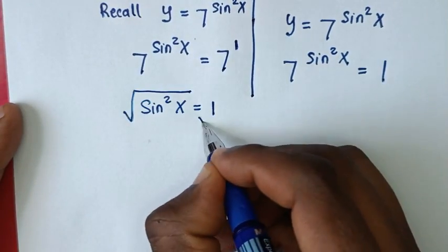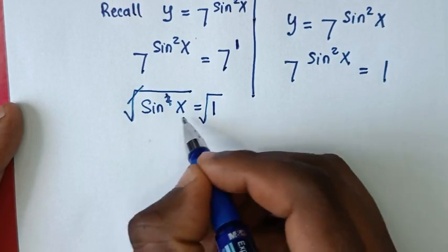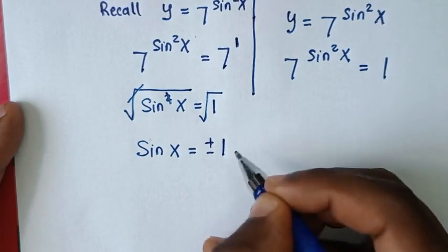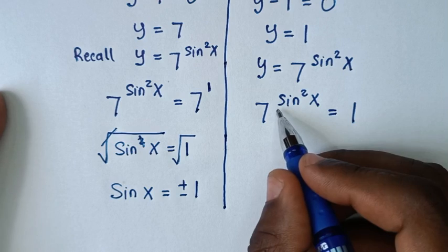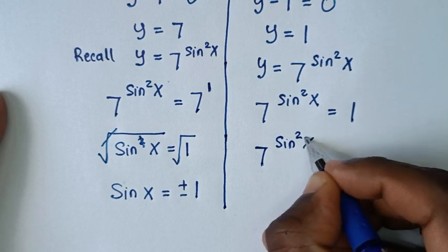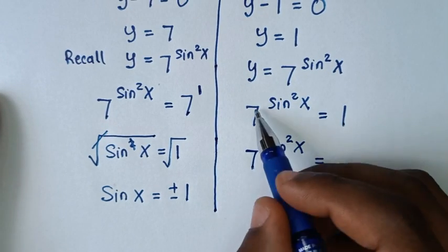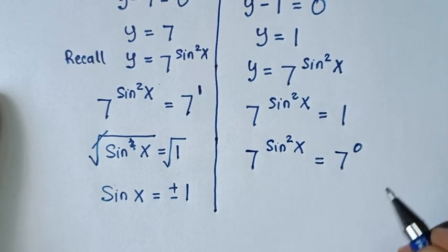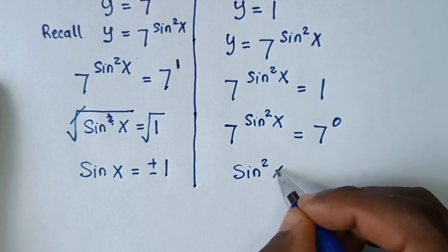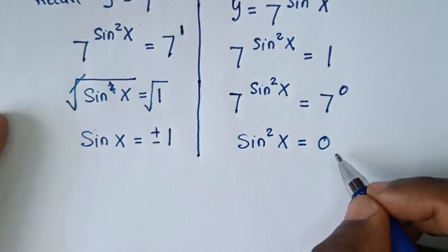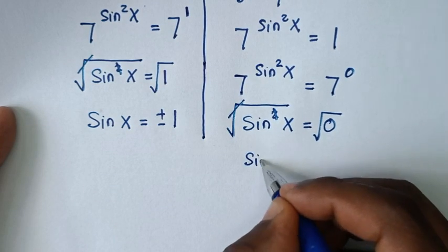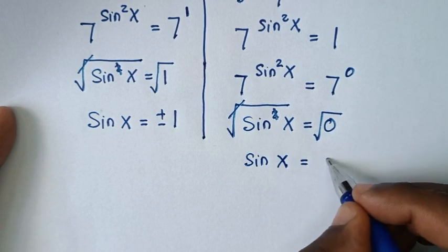From sin²x = 1, applying square root to both sides: sin x = ±1. From sin²x = 0, applying square root to both sides: sin x = 0.